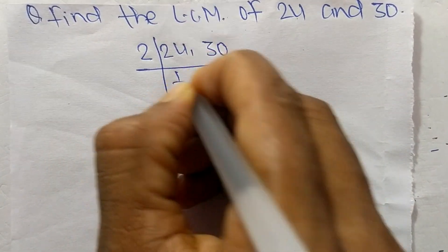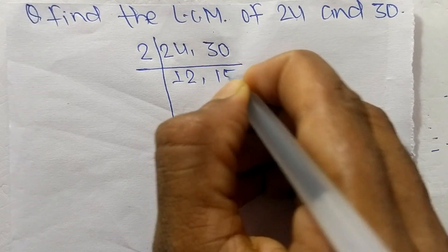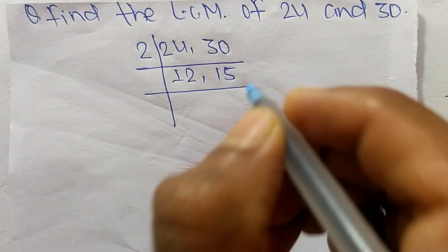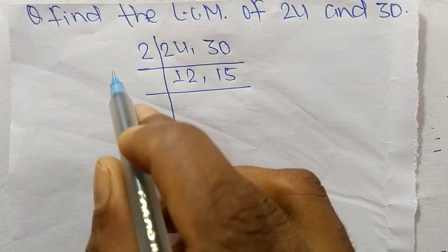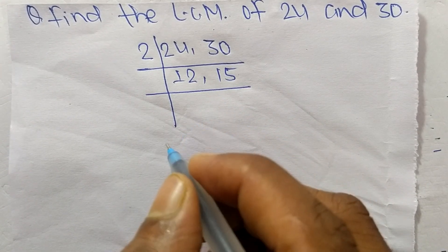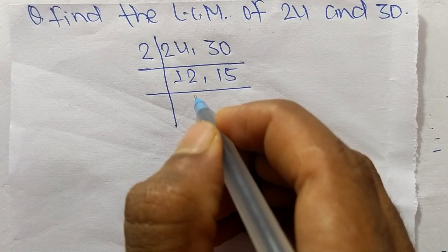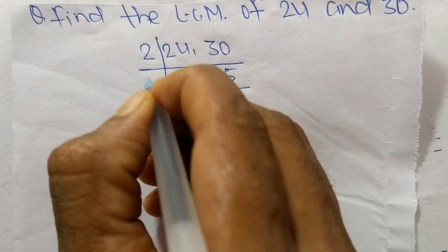So 2 times 12 will mean 24, and 2 times 15 means it is 30. Now these both numbers are not exactly divisible by 2, so we choose the number greater than 2 which can exactly divide both numbers, so the number is 3.